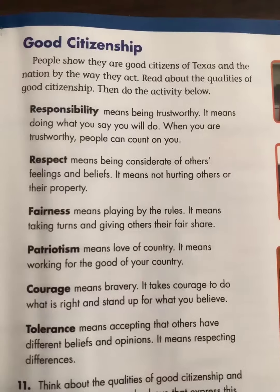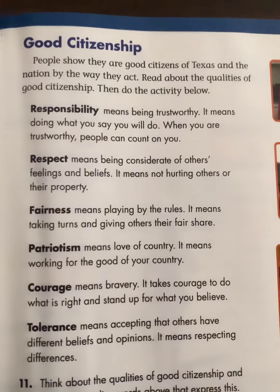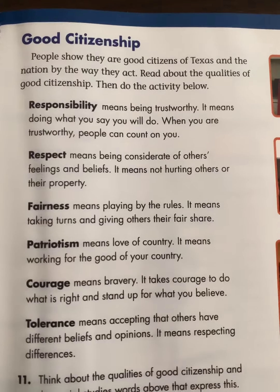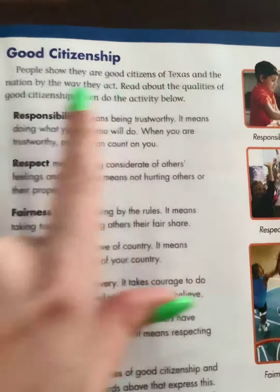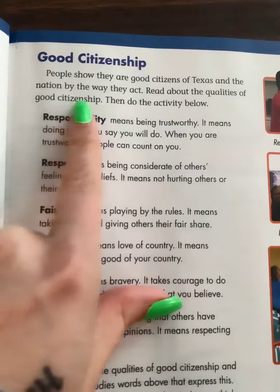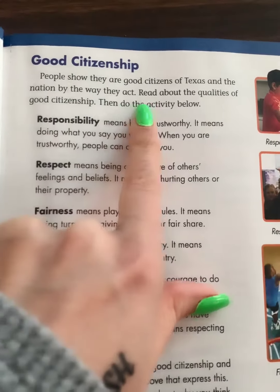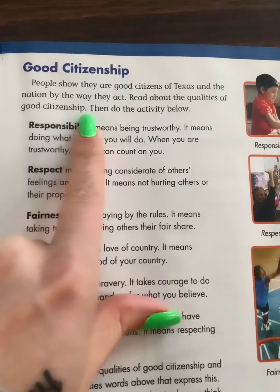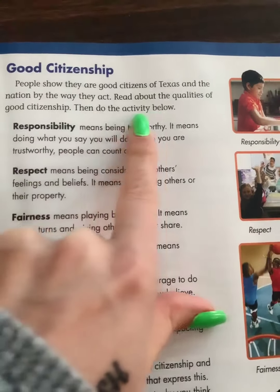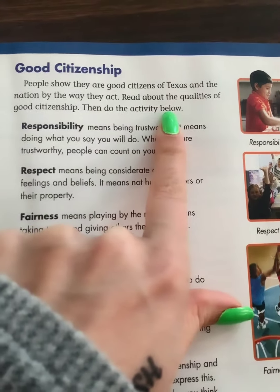So the page starts out with good citizenship. Good citizenship: people show they are good citizens of Texas and the nation by the way they act. Read about the qualities of good citizenship, then do the activity below.